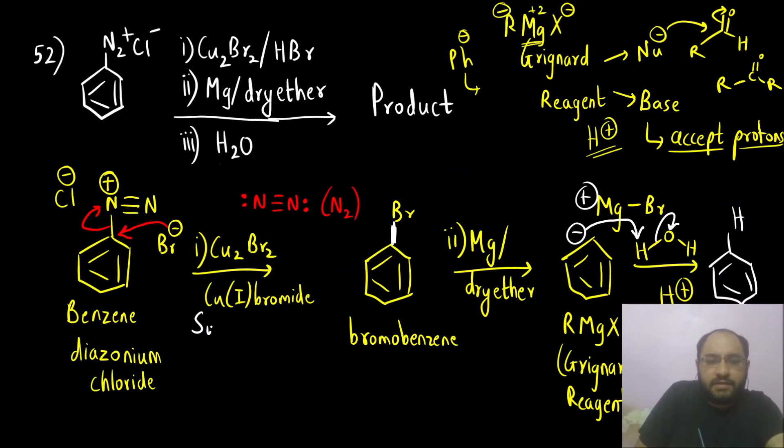What we did, first step was substitution reaction. Why substitution occurred? Because N2 is a very good leaving group. Nitrogen gas is a very good leaving group and then what we formed is an alkyl halide RX.